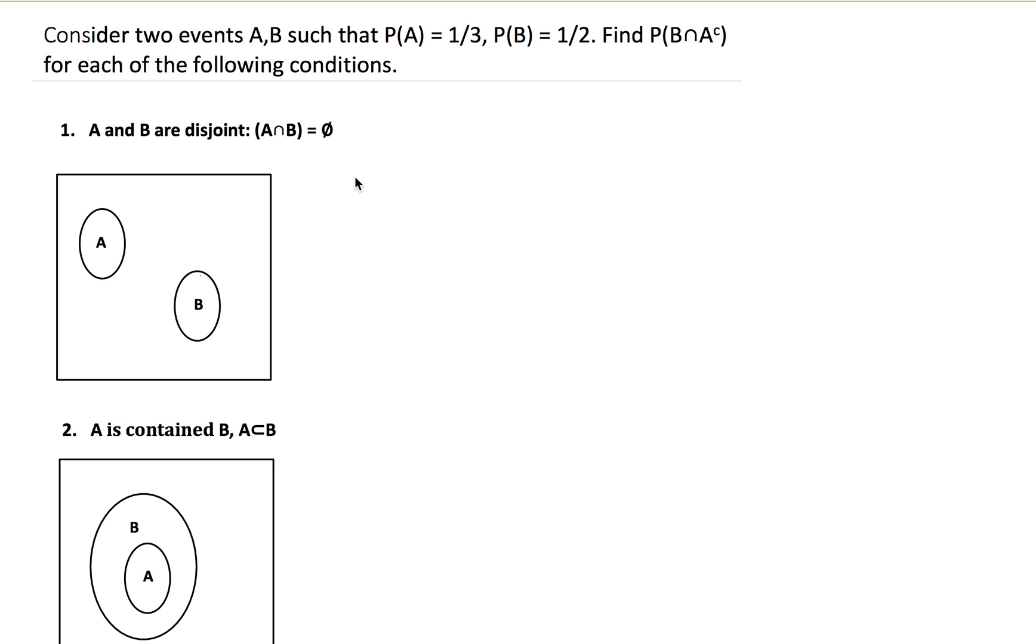Our first condition is A and B are disjoint, meaning that the intersection of the two is the empty set. It means that they don't intersect.